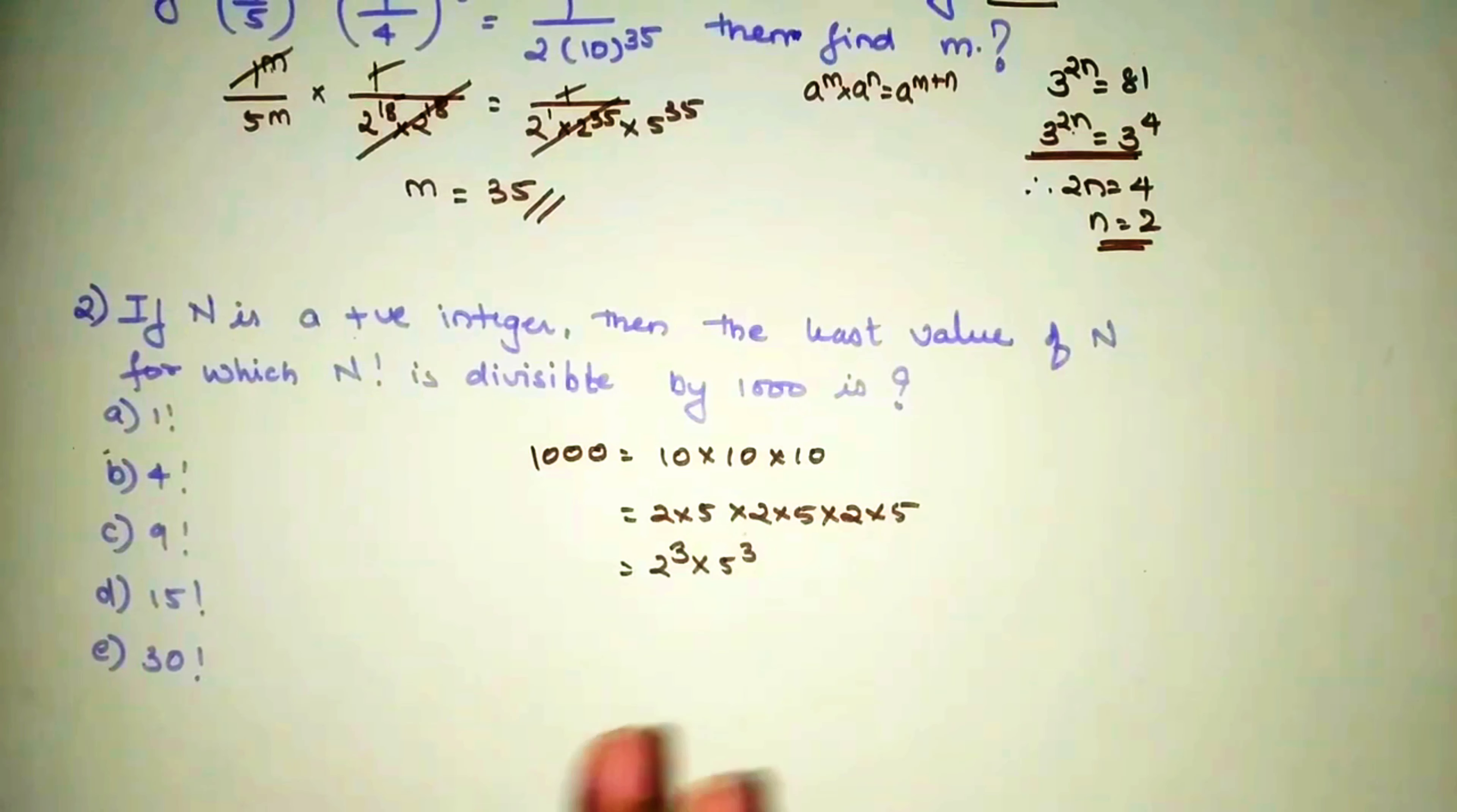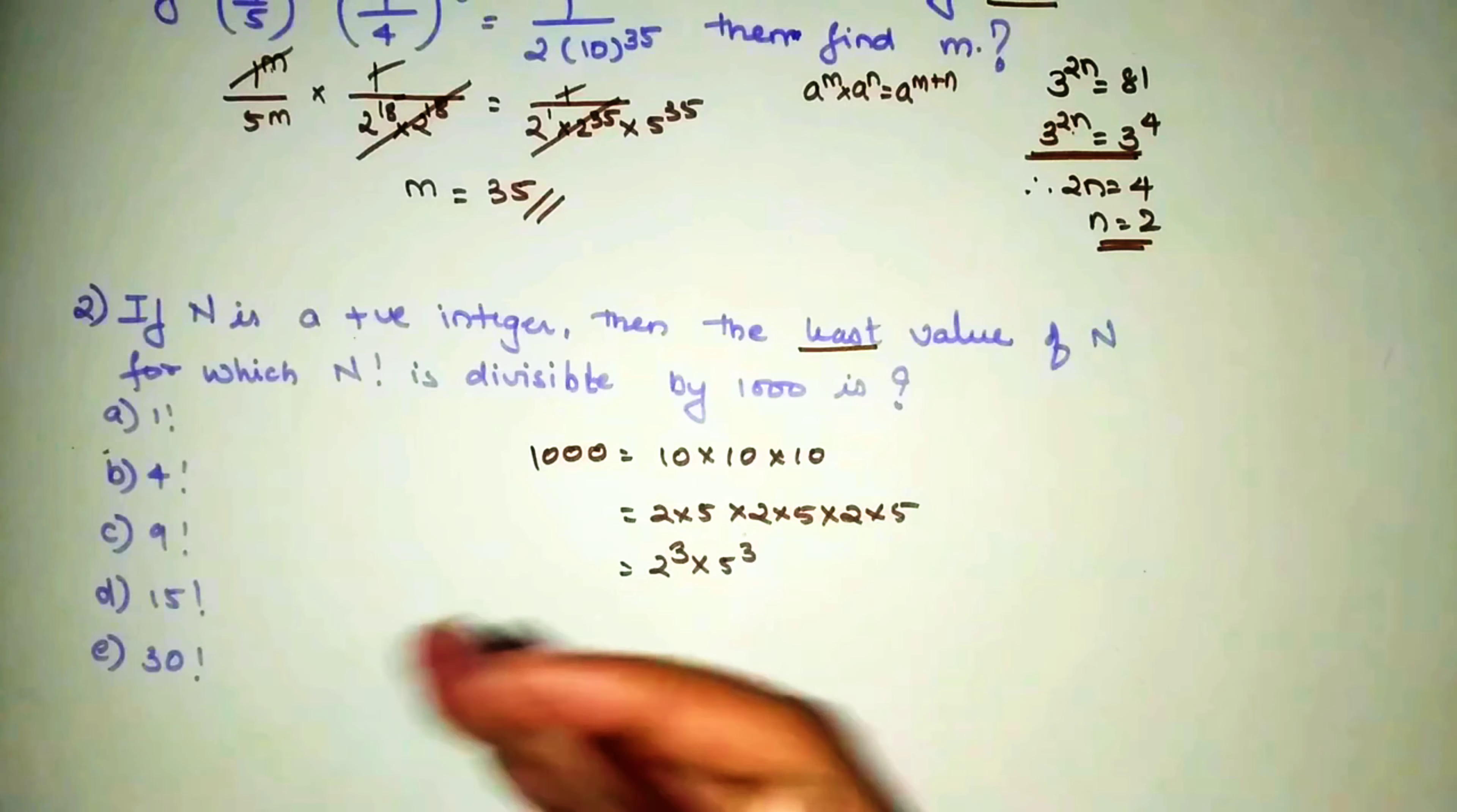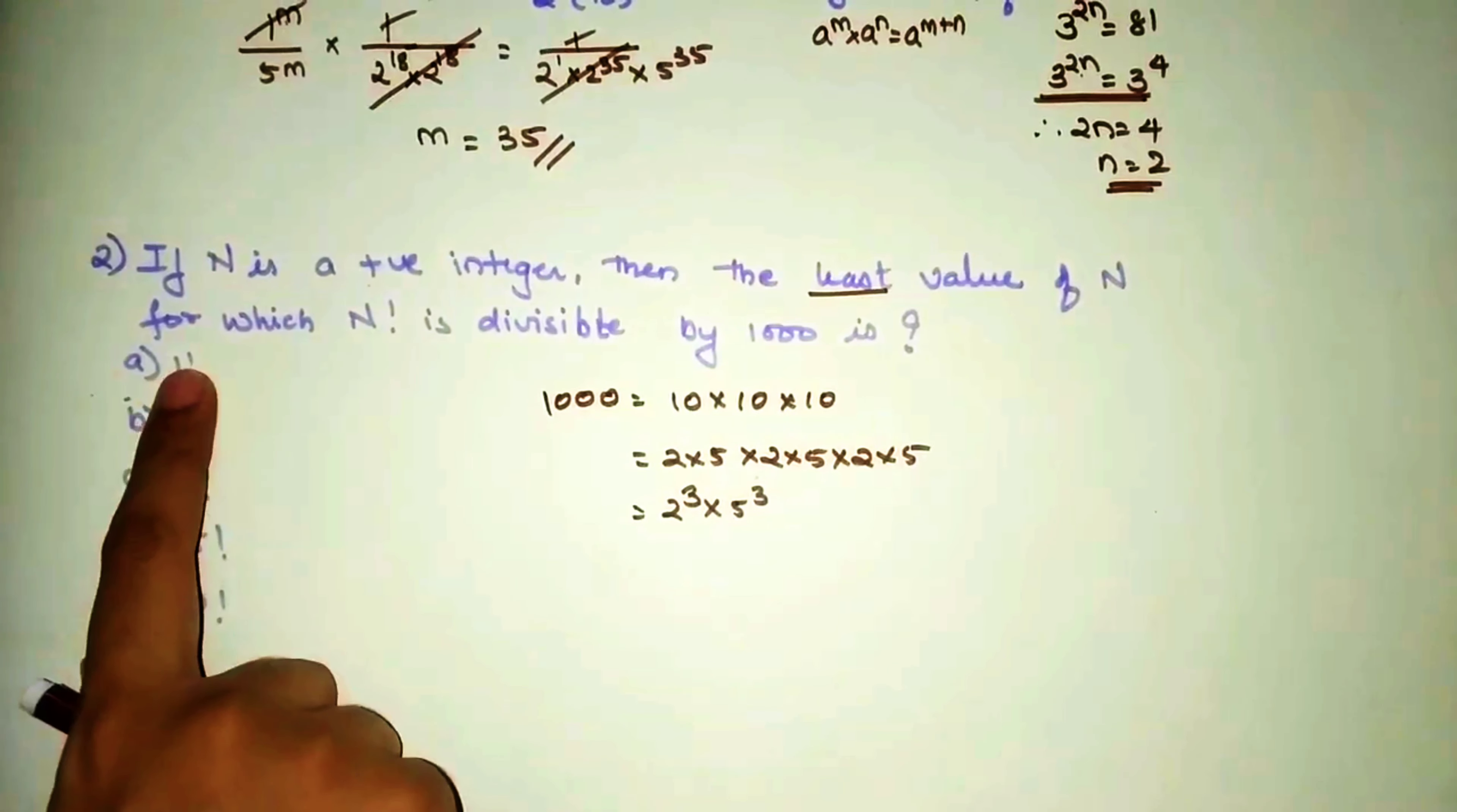So here I can say we need 2 cube and we need 5 cube. And 2 cube is 8. So you will take the least value, you have to go from top to bottom. You will have to select those options which are the smallest, and if that is not satisfying this particular situation, then we go to the number which is a bit higher than that.